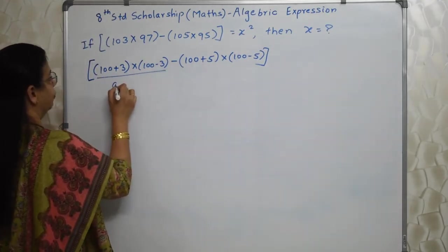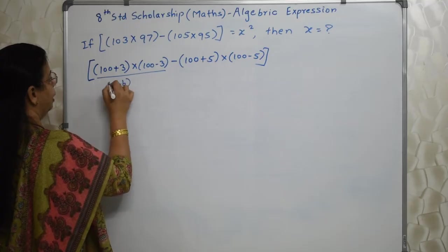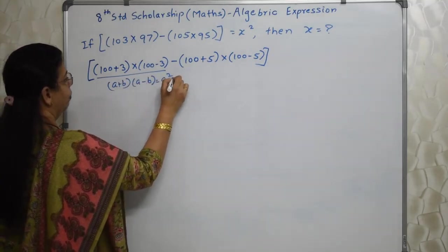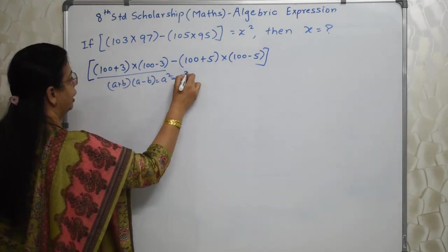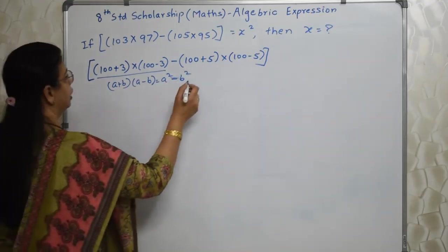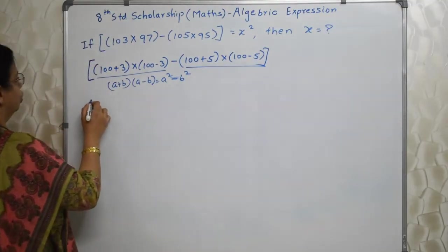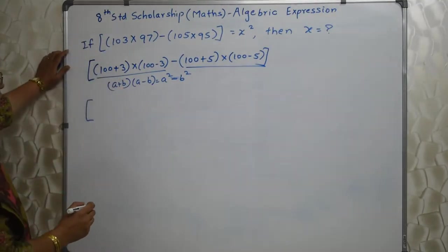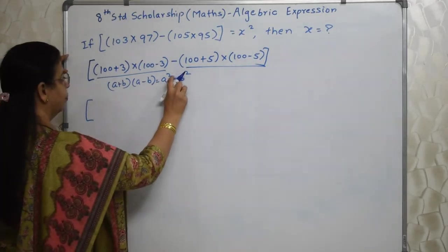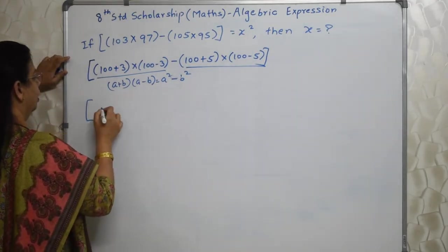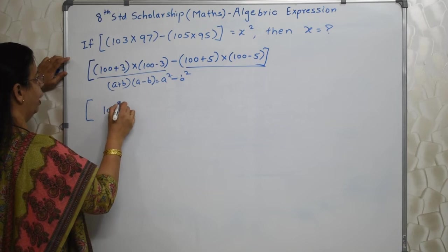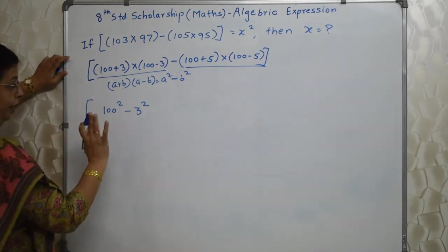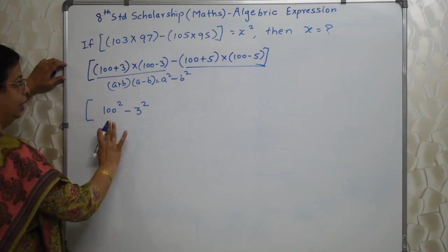Now observe this. This is identity. A plus B and A minus B that is equal to A square minus B square. This is identity. We have to use this for both these things. So A is 100 here and B is 3 here. So how can I write this? 100 square minus 3 square. I don't have to find out this. Just leave it like that.